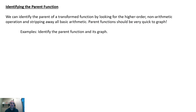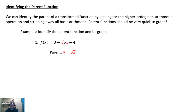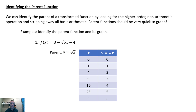Let's do some examples identifying the parent function and the parent function graph. Consider the function f(x) = 3 minus the square root of 5x minus 4. If we strip away all of the basic arithmetic — the 3, the minus, the 5, the minus 4 — what we have left is the square root of X, and that is our parent function. That is the one higher-order operation, the square root operation, on X.